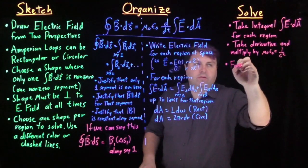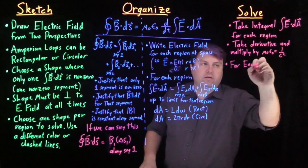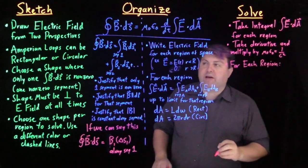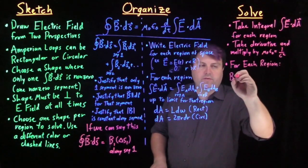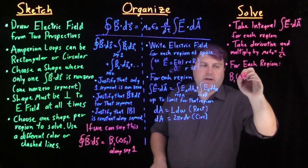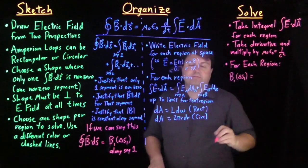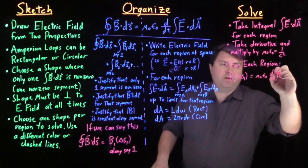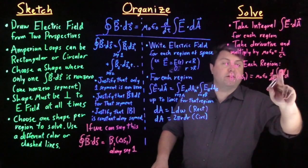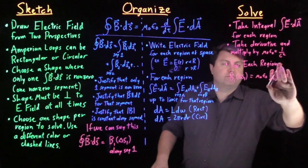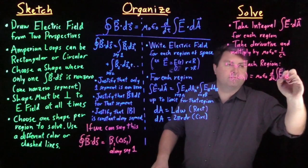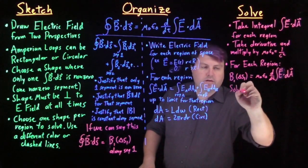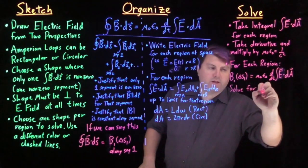So once we get that, then for each region we get that our left-hand side B over the segment delta S of the segment is equal to our μ₀ε₀ d/dt of E·dA and then we solve for B₁.